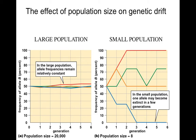In a large population of about 20,000, allele frequencies tend to remain relatively constant over generations with only slight fluctuations. However, in a small population of eight, the loss of one individual can very quickly lead to an entire population of one allele or another. One allele can become extinct in just a few generations. Small populations are much more susceptible to genetic drift than large populations.